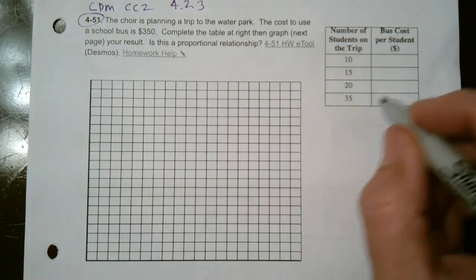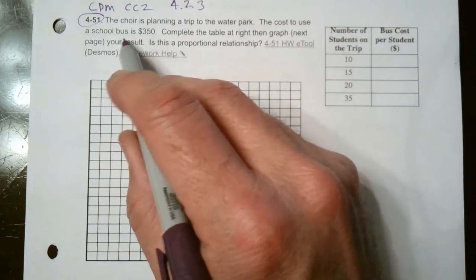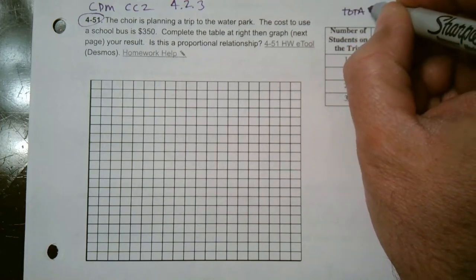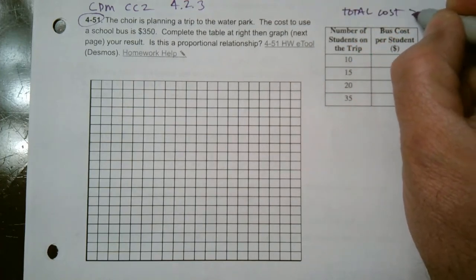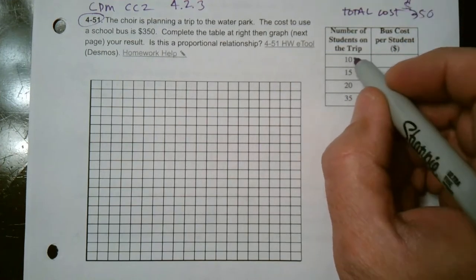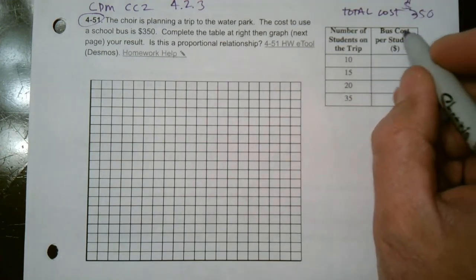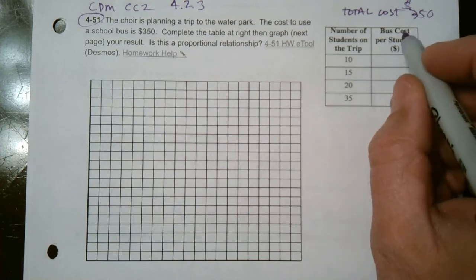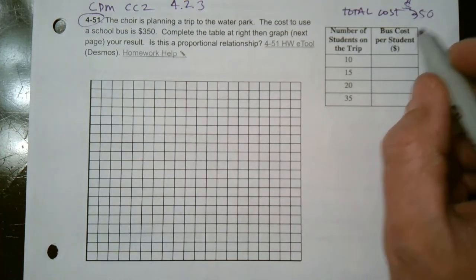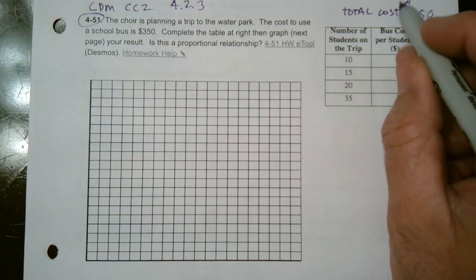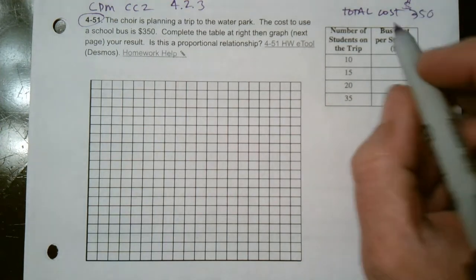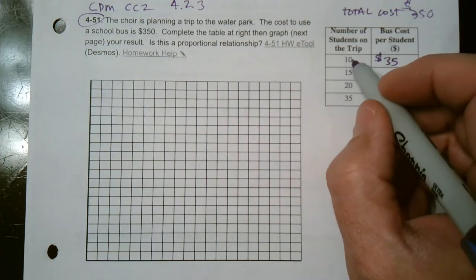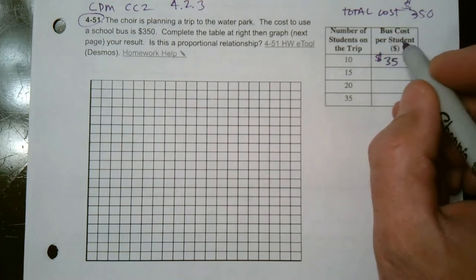We know that the total cost is $350 to use the school bus. So if there's 10 students on the trip, how much would the bus cost per student? How do I do that math? If there's only 10 students and I want to know what is the cost of the bus per student, I would take that total cost of the bus and divide by the number of students. So $350 divided by 10 is $35. If there was 10 students, the cost per student would be $35.